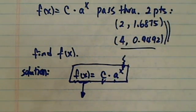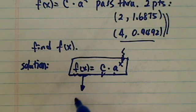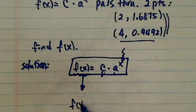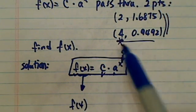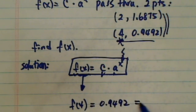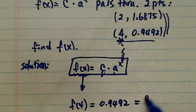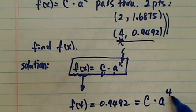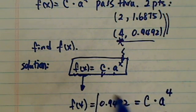Let's use the first one. f of 4, so if I plug f of 4 in there, this means this is x equal to 4, then I have equal to 0.9492, which is also equal to c times a to the 4th. Okay, so here's my first equation here.